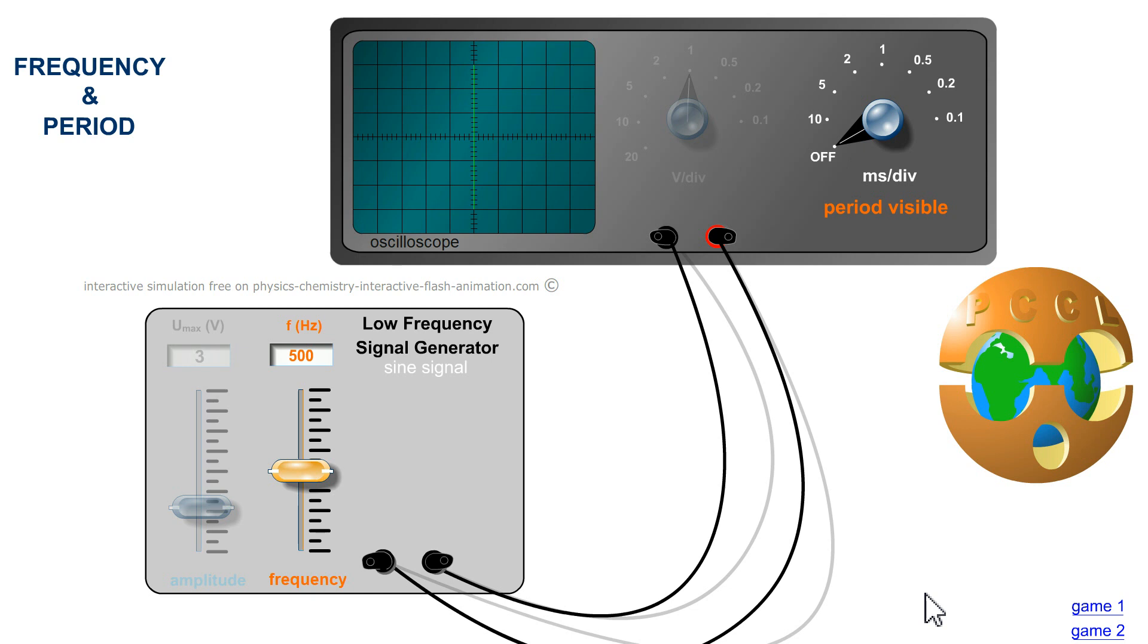Hello everyone. Welcome to PCCL Physics Chemistry. The oscilloscope allows you to view alternating voltages and measure their period. Analog scopes do not display frequency.